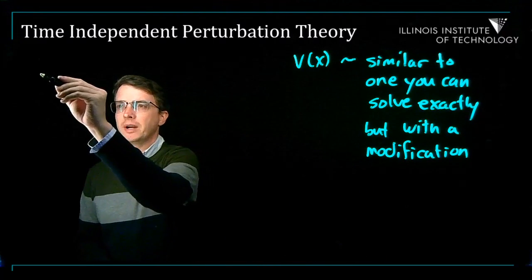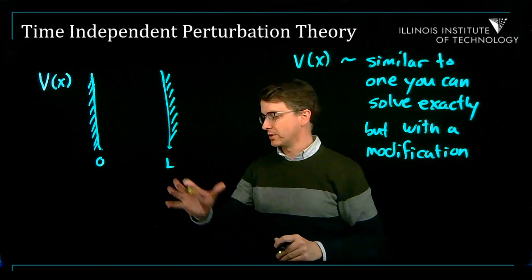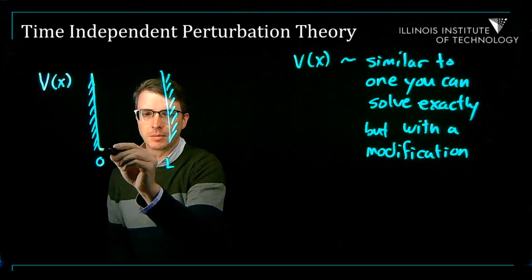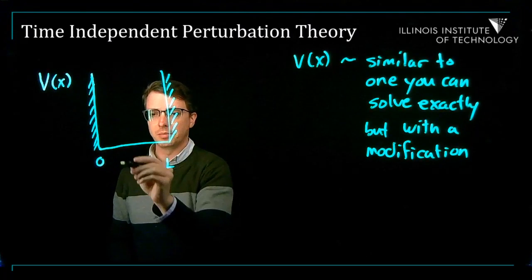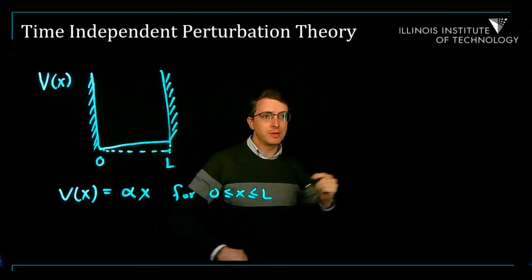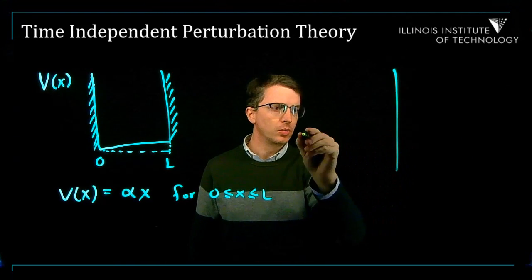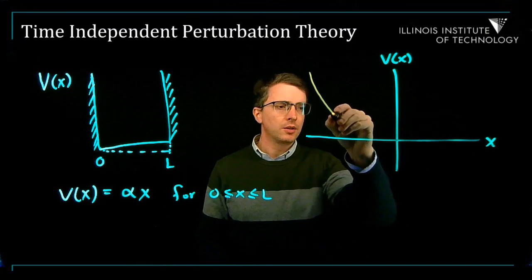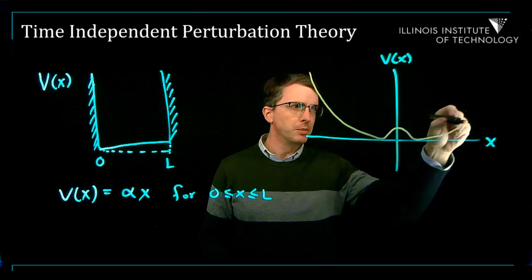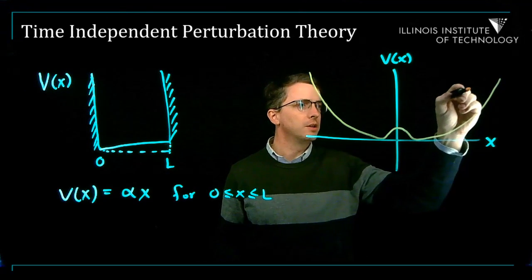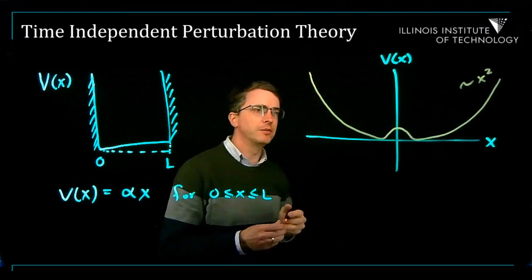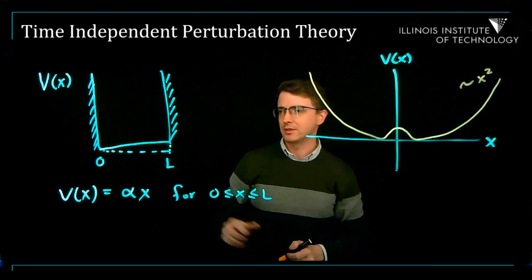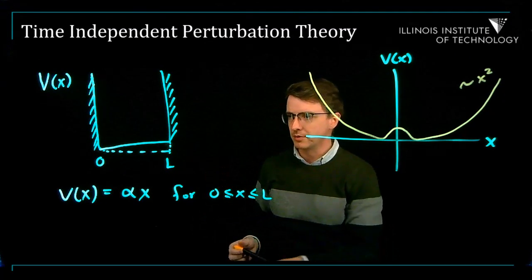As an example, you might have something that looks like an infinite square well, but maybe the bottom is not completely flat — maybe it has a slightly sloped bottom. Or maybe you have something like v of x that looks like the harmonic oscillator, but has some kind of wiggle or bump at the center. So this out here is proportional to x squared, but there's some kind of little bump in the middle. Looks a lot like the harmonic oscillator or the infinite square well, but with a little bit of a difference.